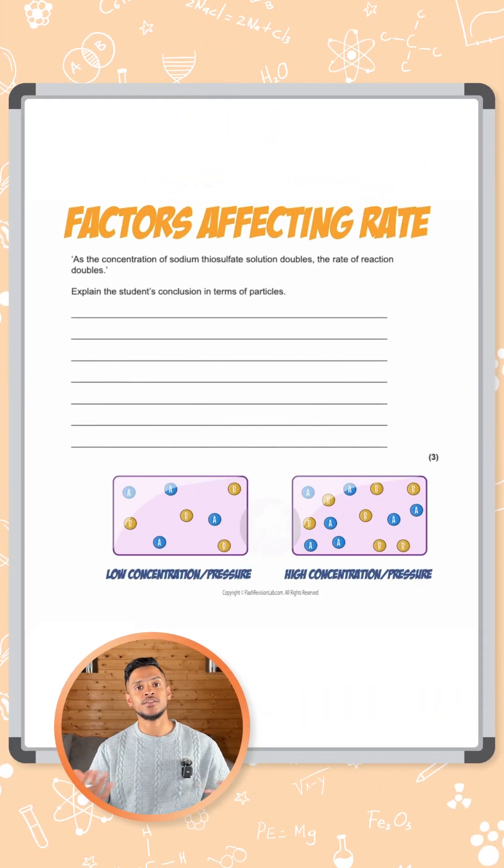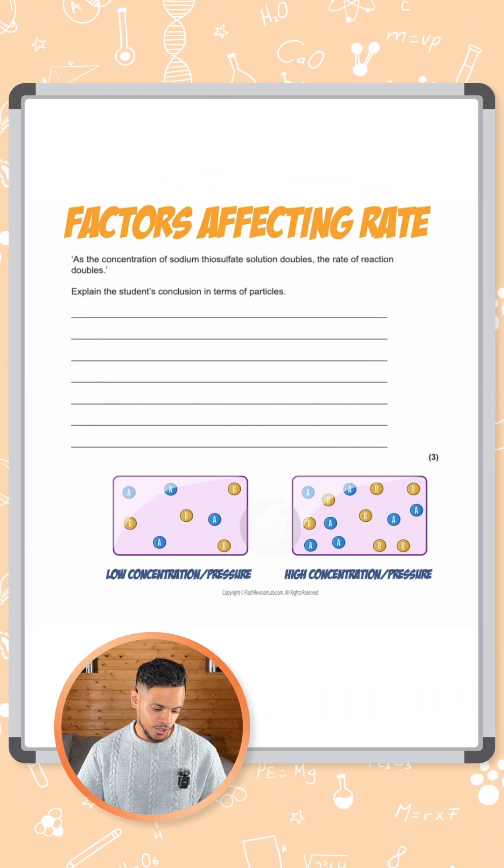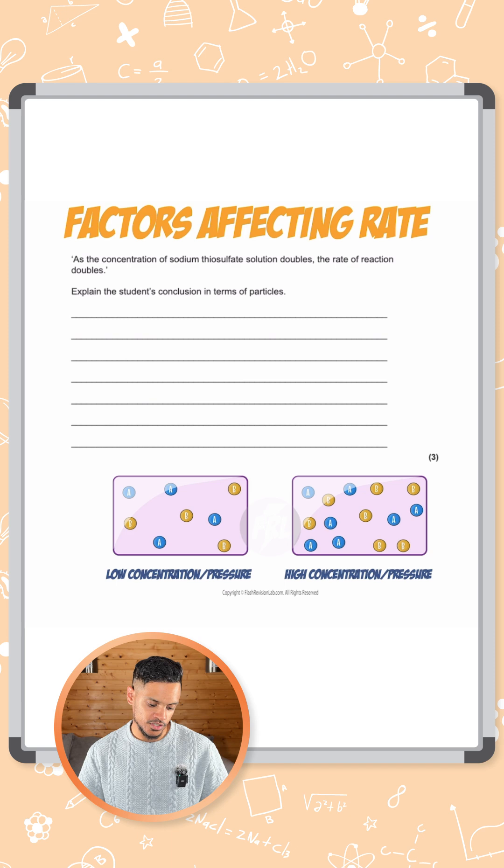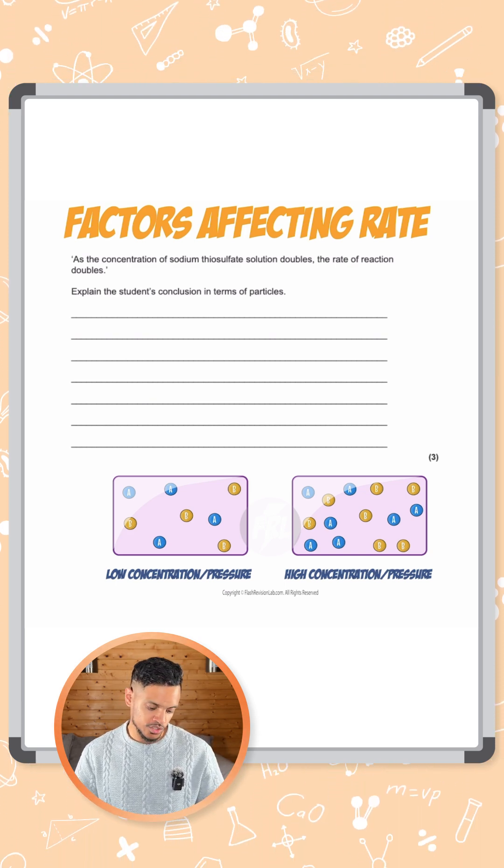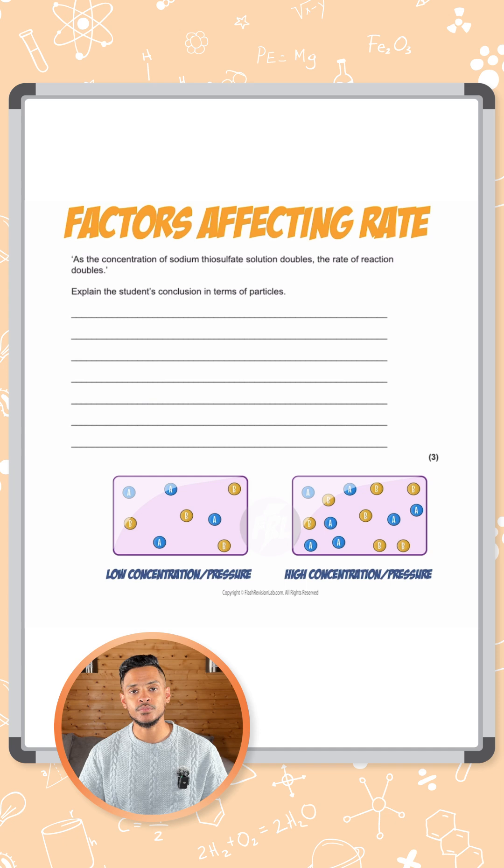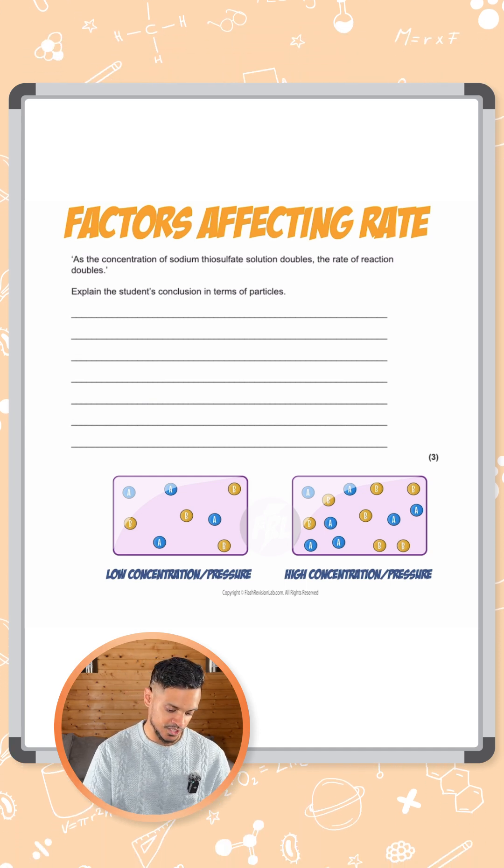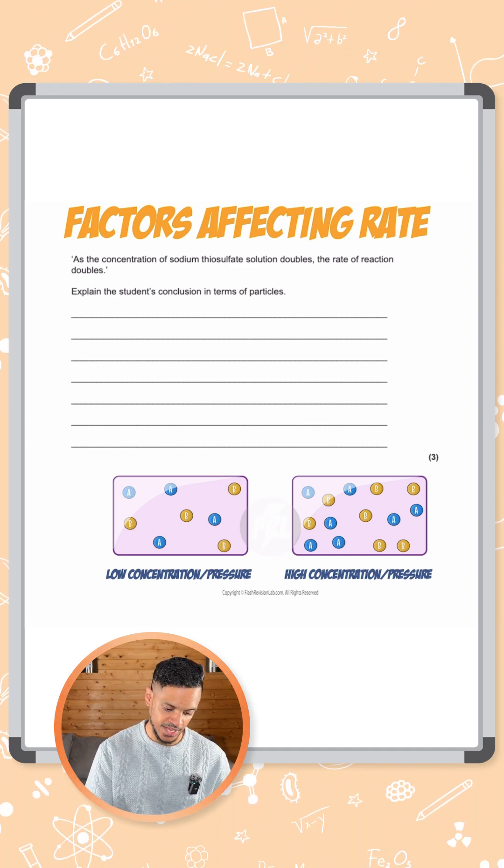Okay, a question here on the factors affecting the rate of a reaction. As the concentration of sodium thiosulfate solution doubles, the rate doubles. Explain the student's conclusion in terms of particles. So we're using collision theory here to explain what the student has just said.